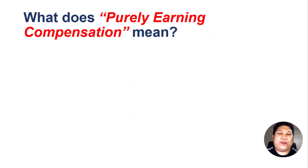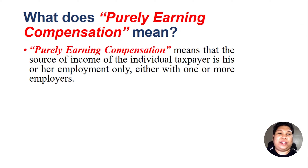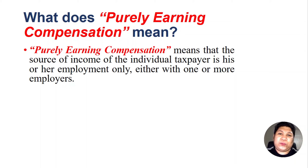What does purely earning compensation mean? In this video our focus is an individual taxpayer who is single and who is purely earning compensation. When we say purely earning compensation, this means the source of income is his or her employment only, either with one or more employers — meaning he or she is an employee, whether rank and file, managerial, or supervisorial. As long as the source of income is derived from employment, that taxpayer is considered as purely earning compensation.